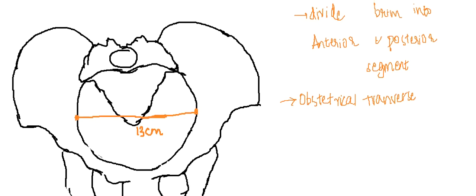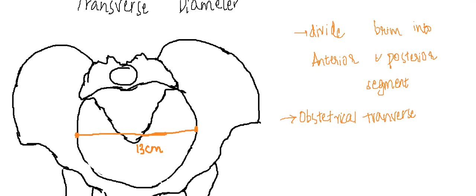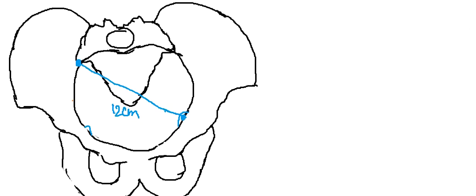Now let us learn about one more diameter called the oblique diameter. In the oblique diameter there are two oblique diameters — one on the right and the other on the left. These two oblique diameters extend from the sacroiliac joint to the opposite ileopectineal eminence. The oblique diameter measures around 12 centimeters, while the transverse diameter measures around 13 centimeters.